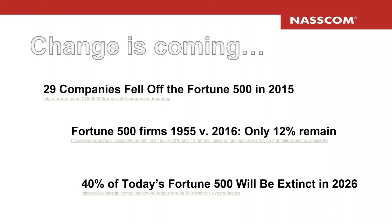Fortune 500 firms between 1955 and 2016 — only 20% remain. The rest, 88%, has gone. They changed in different ways: some disappeared, some got acquired. And 40% of today's Fortune 500 will be extinct by 2026. Although this is somewhat predictive messaging, we can see how it is extending. Companies that existed in 1955 have largely moved out of what they were doing.